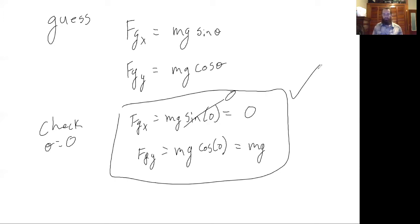angles and all that stuff. You can just guess what you think the right trigonometric function to use for those components, and then check your work using a simple boundary condition like theta equals zero.